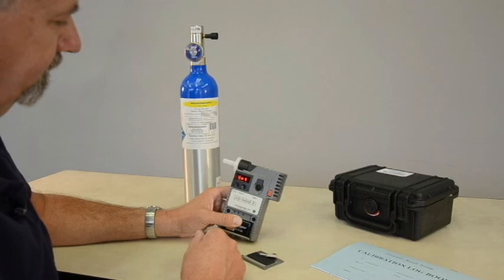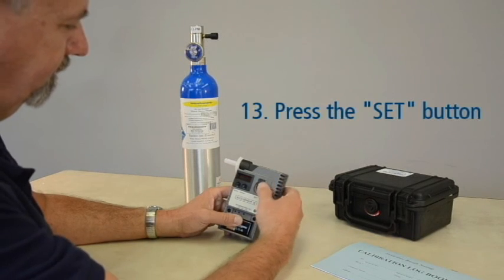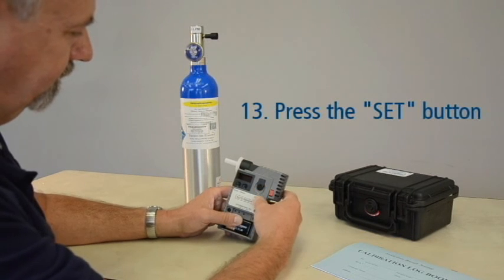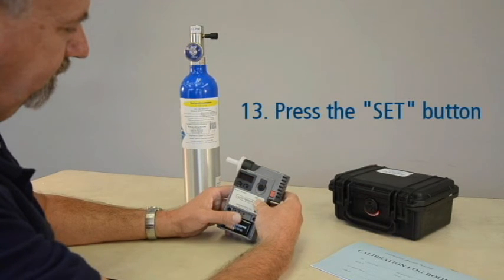When the instrument flashes SET, press the SET button. This ensures the fuel cell sampling chamber is in a closed position and the device is ready for the next test.